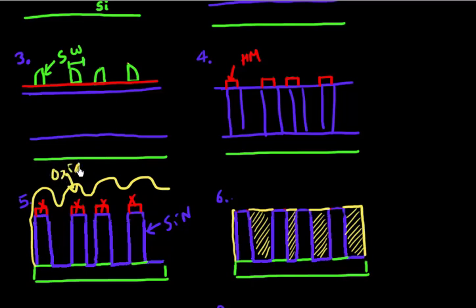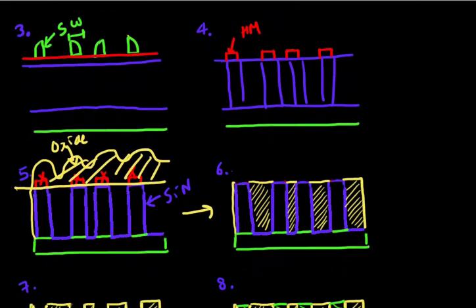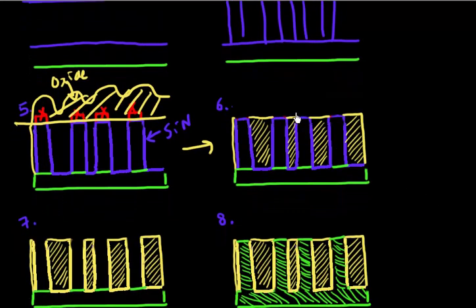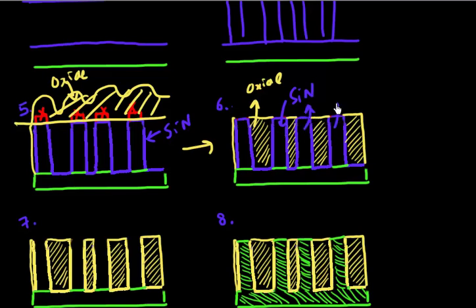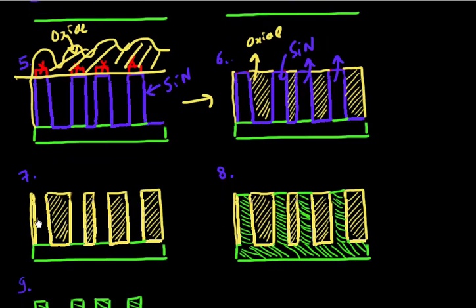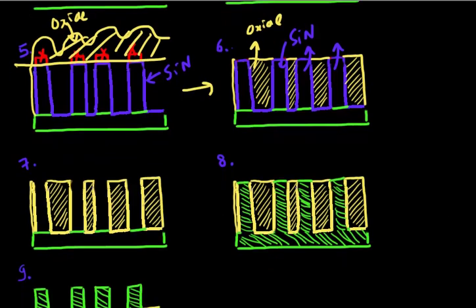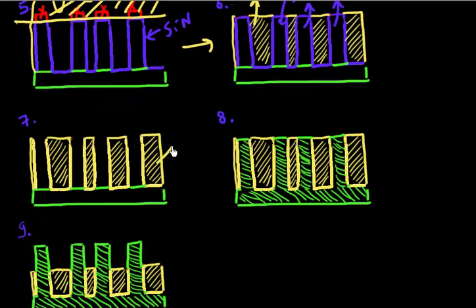You fill the trenches up with an oxide layer, then you CMP it off to get this nice planar feature with multiple nitride fins. The way you proceed from here is to use an etch that is selective between the nitride and the oxide film, and selectively remove the nitride. So you remove the nitride from the spacer, and what you are left with is a mold — a dielectric mold made of silicon oxide.